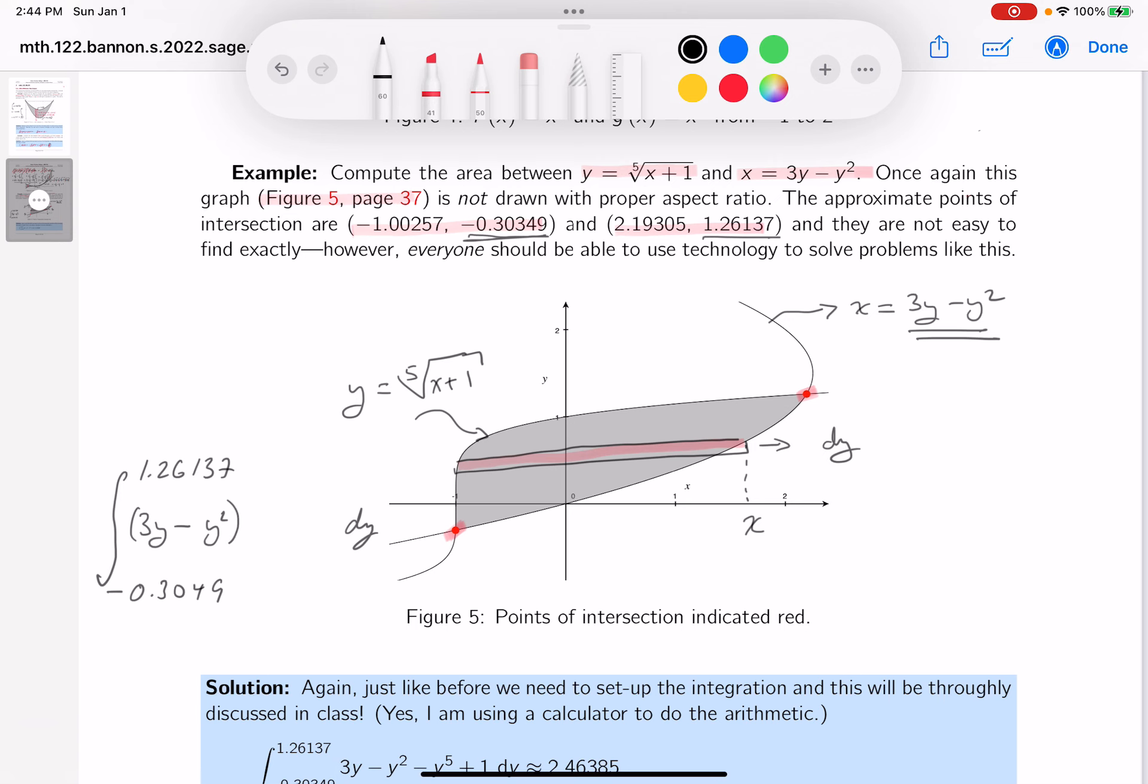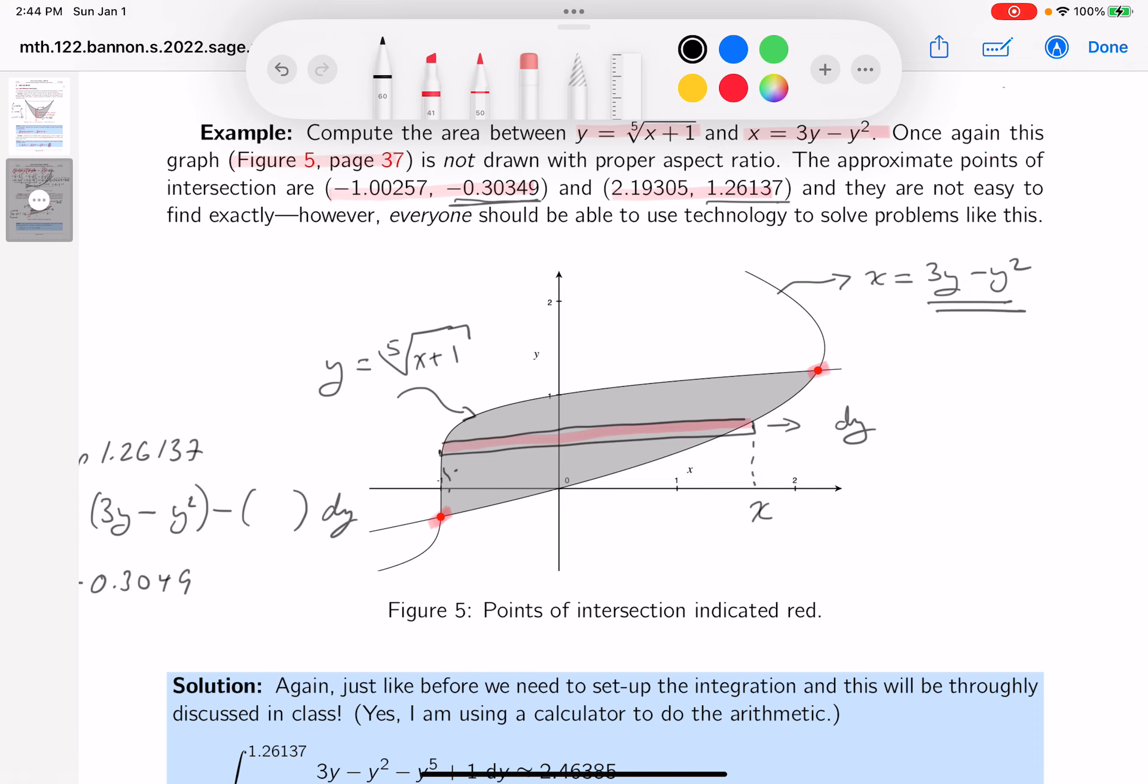That's the upper value. Then I've got to take away the lower value. Well, the lower value is this other curve. That's the other curve over here. Unfortunately, it says y equals. I need to solve that for x to find out what the x value is. So let's put this over here.